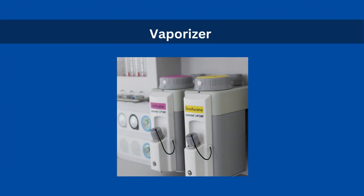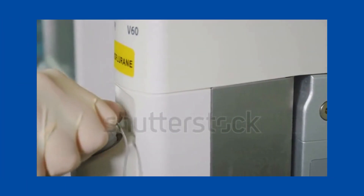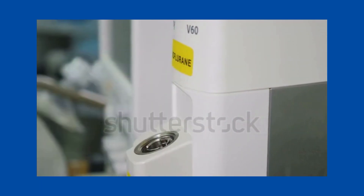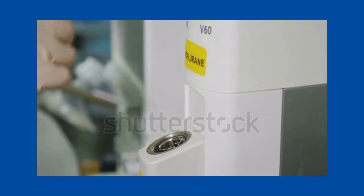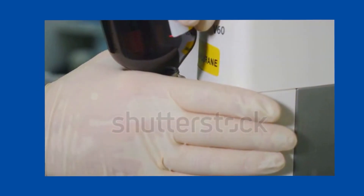Vaporizers are color coded to avoid wrong installation of volatile liquids — for example, isoflurane is purple, sevoflurane is yellow, while halothane is red. Vaporizers have a unidirectional valve to prevent backflow during positive pressure ventilation. They are also equipped with an interlock mechanism, which prevents more than one vaporizer from being used at the same time.